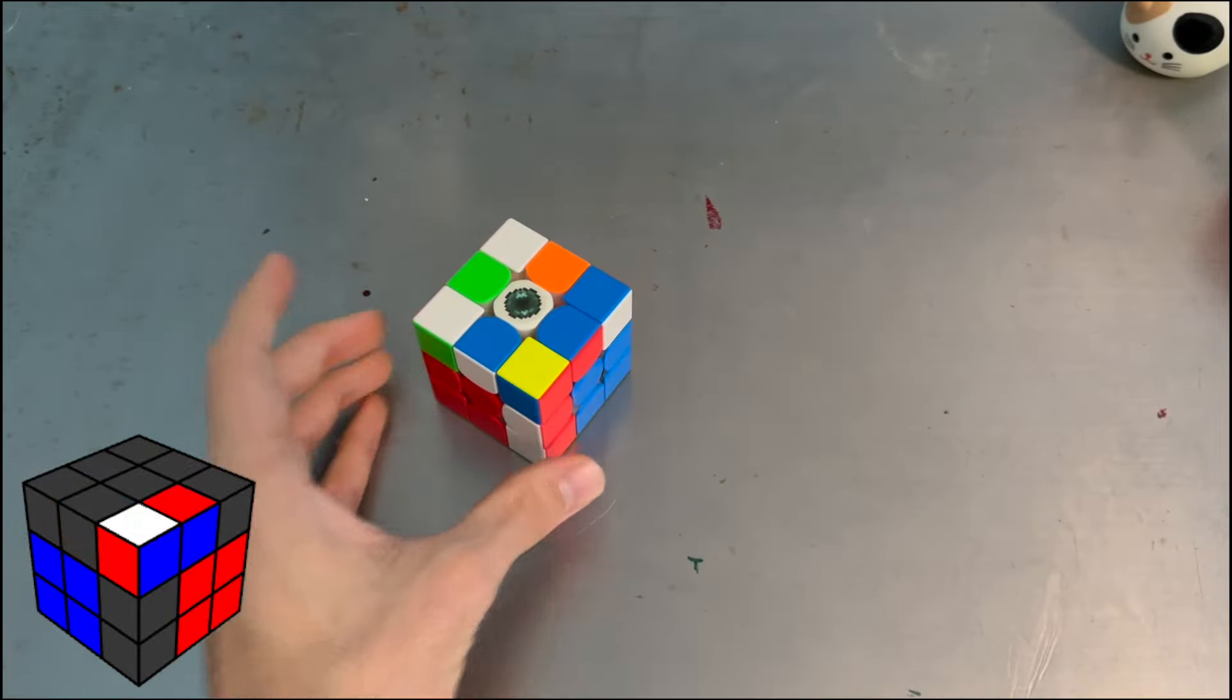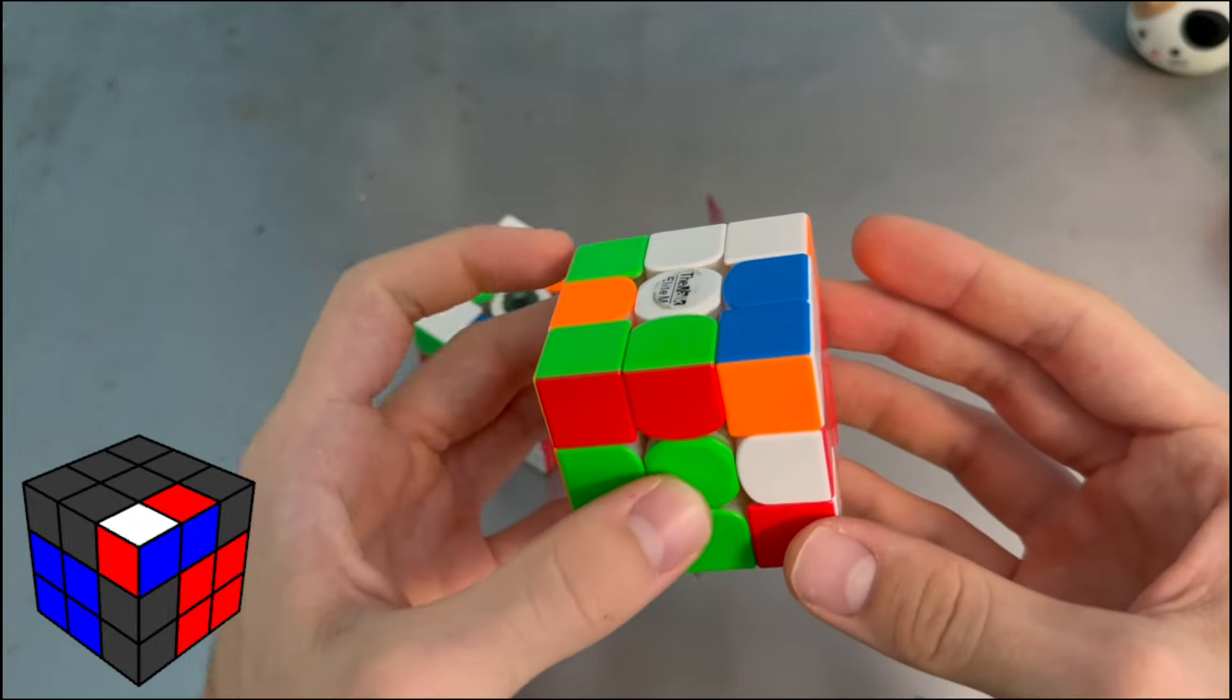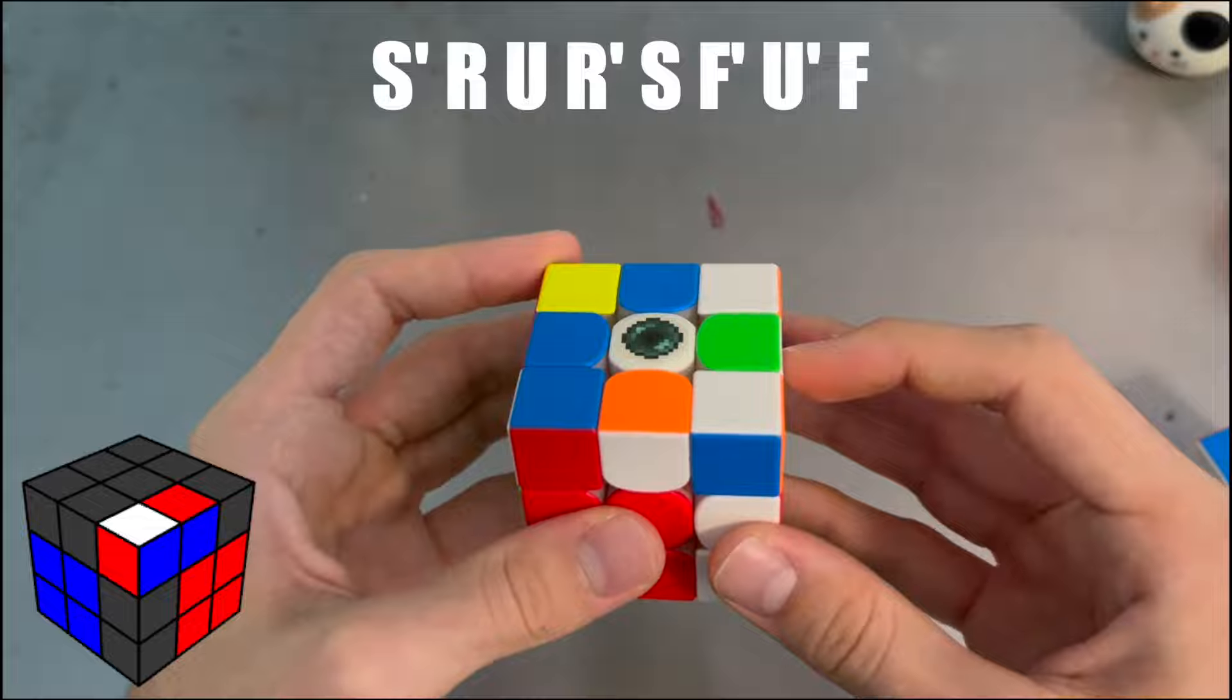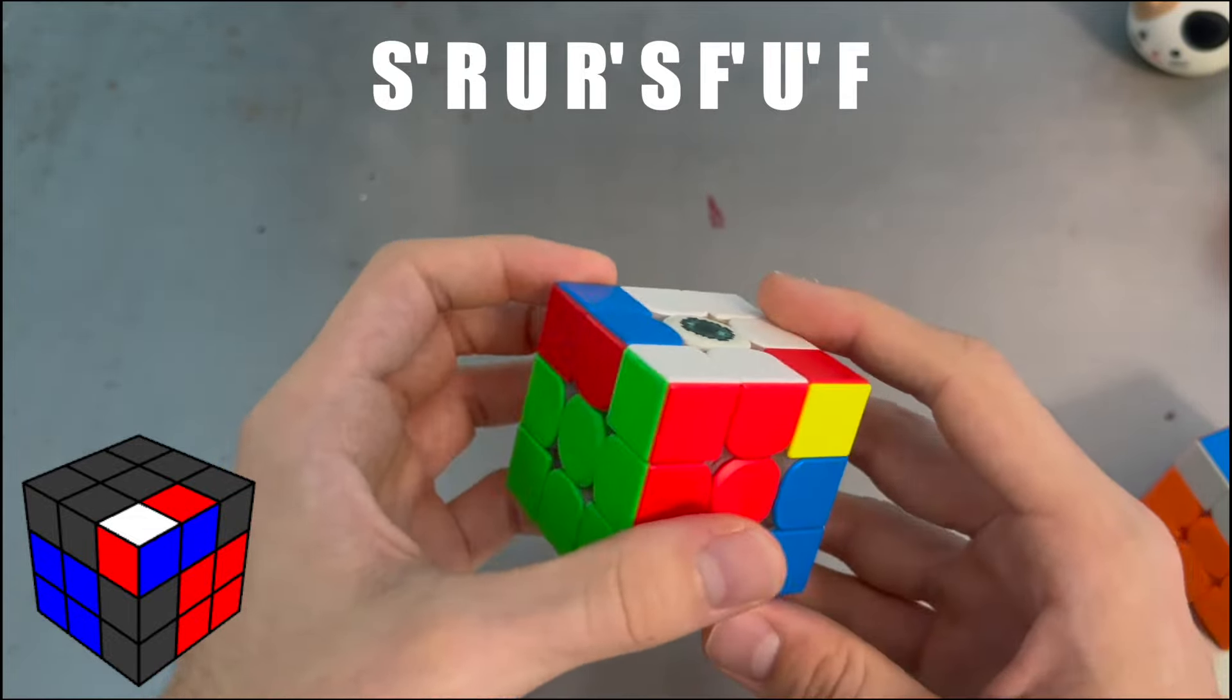Next up we've got this one. Normally you would do F inverse sexy and insert, but here you can actually do S prime, R U R prime S, and then that gives you a free pair.